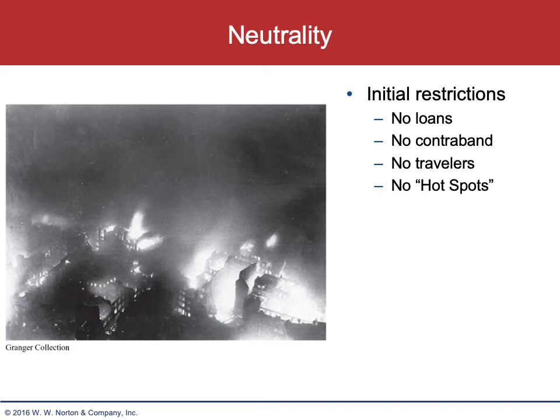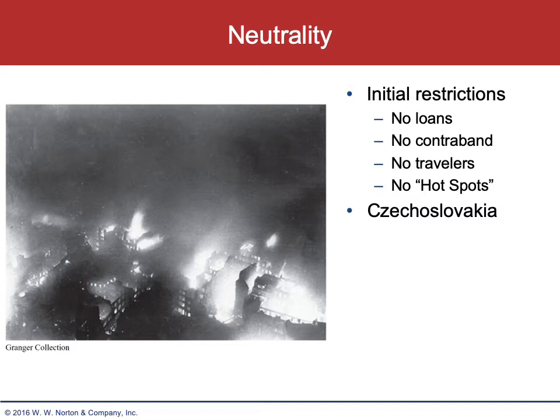American ships were to avoid the so-called hotspots — areas in the ocean where there was known German submarine activity and naval combat. These areas would be designated by the government, and American shipping would have to bypass those areas. This created a great deal of confusion, but for the most part, this was the United States government trying to avoid situations that would pull the United States into the conflict.